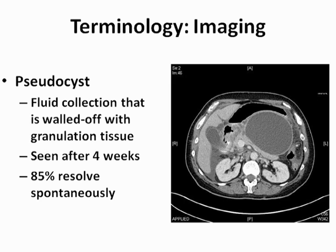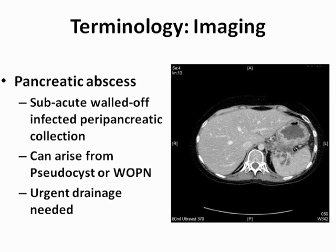This CT scan shows a pseudocyst — a fluid collection that is walled off with granulation tissue. These are typically seen after 4 weeks, although walls may form earlier, and 85% also resolve spontaneously. In this slide, we see a walled-off fluid collection with a low-attenuation area suggestive of air in the fluid collection, which is typical of a pancreatic abscess. These can arise from a pseudocyst or in walled-off pancreatic necrosis, and urgent drainage is typically needed.